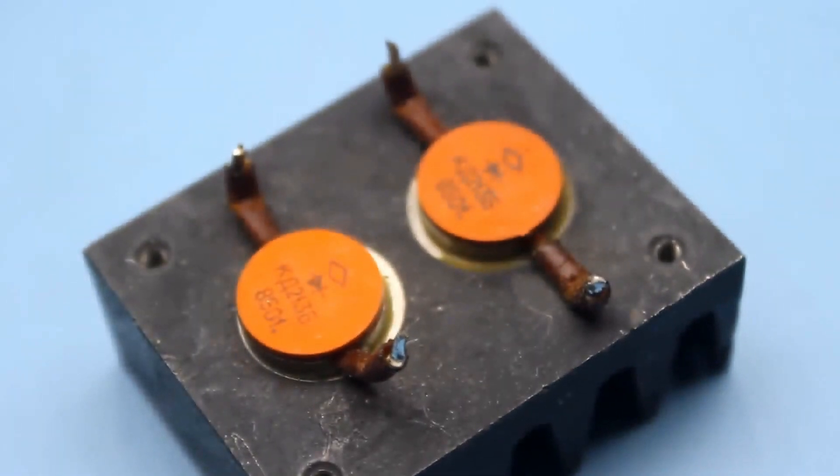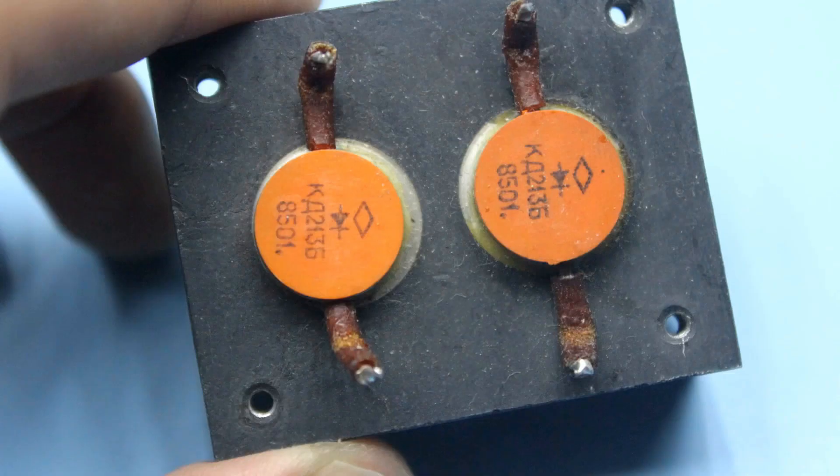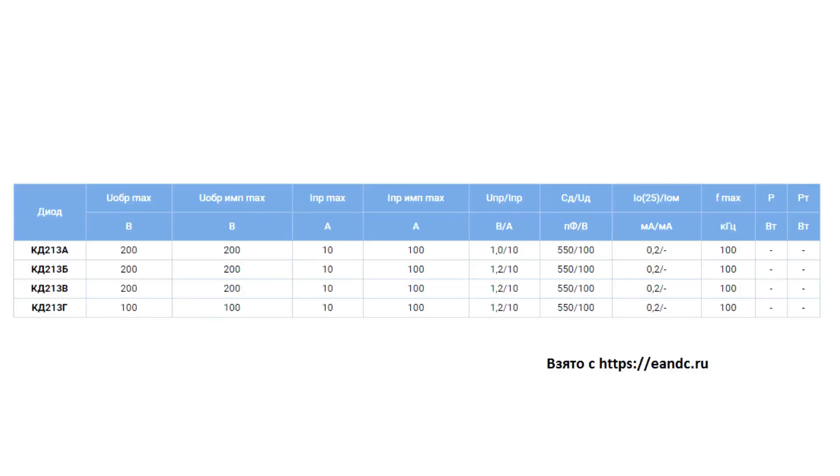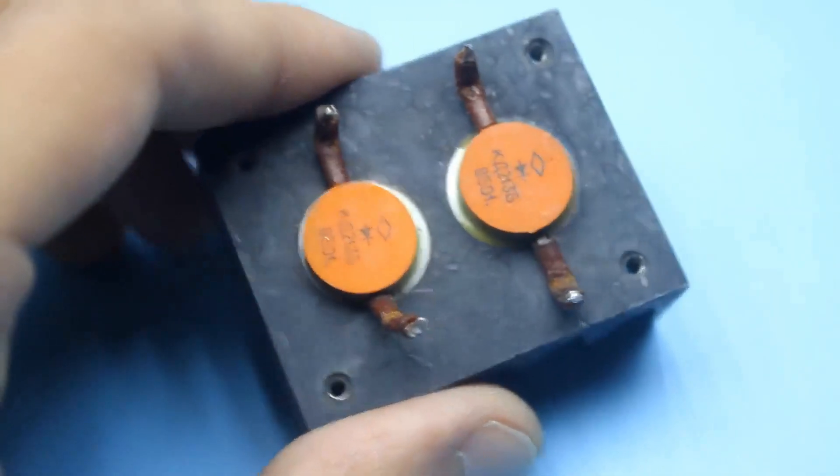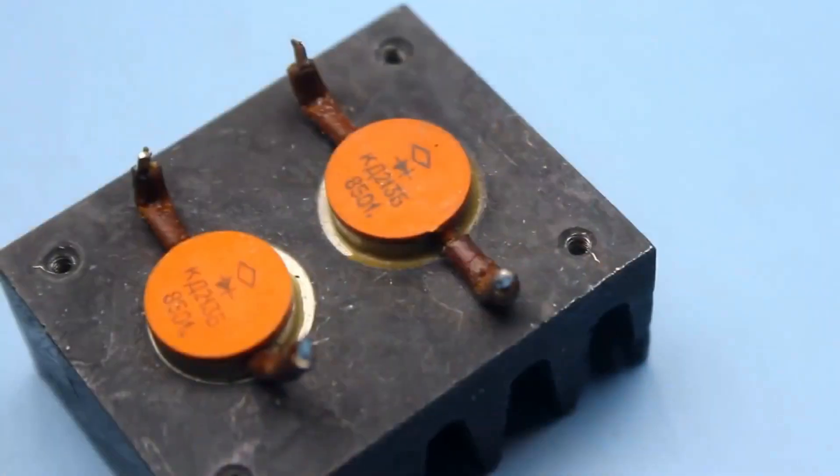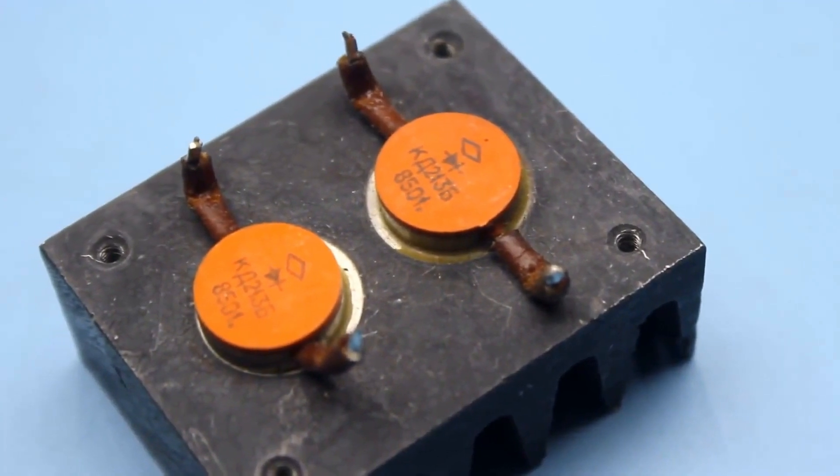KD213 - a powerful 10-amp pulse diode, very popular by the way. In terms of reverse voltage and cut-off frequency, they are no different from the smaller sibling KD212. But 10 amps of current, you must admit, is not bad. By the way, the pulse short-term current could reach up to 100 amps.